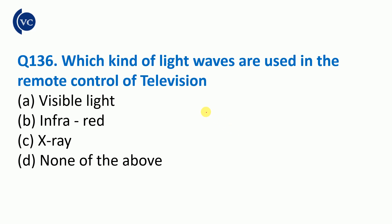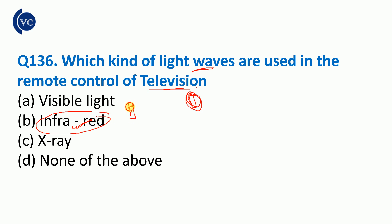Question number 136: Which kind of light wave is used in the remote control of television? In a television remote, infrared light is used — not red color visible light, but infrared light waves are used in the remote.